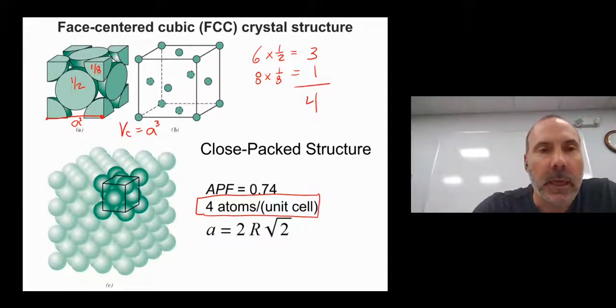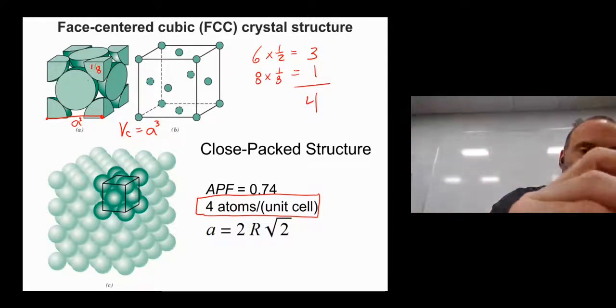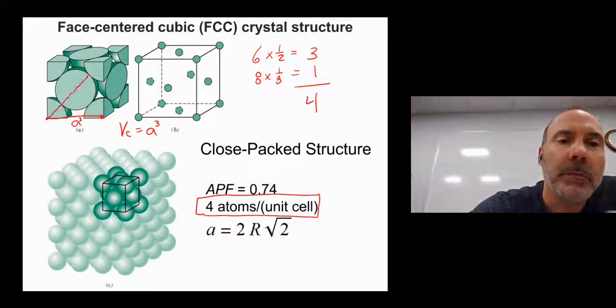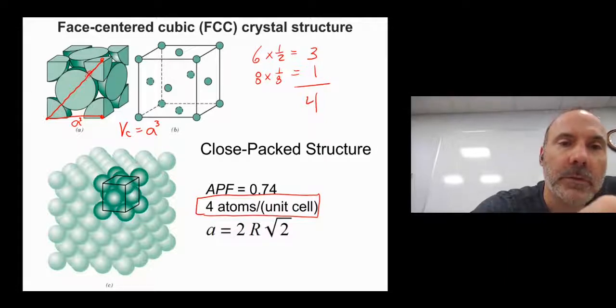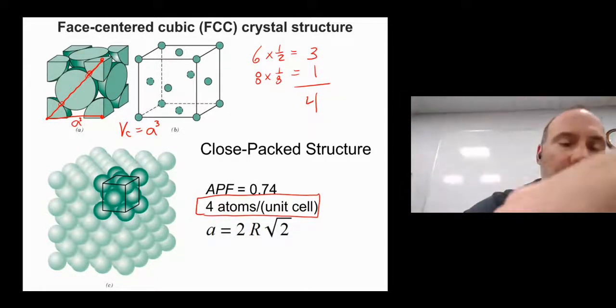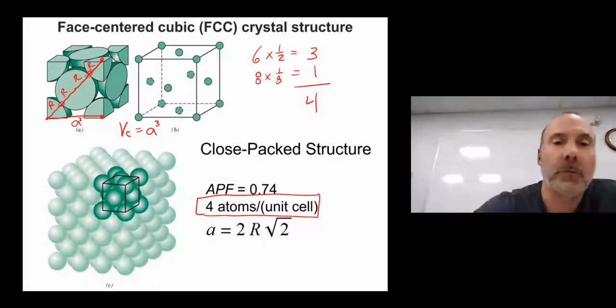So let's find A, the edge length here. So what we're going to do to find A is we want to take a look at our space filling model again and locate where the atoms are touching. So notice in the face-centered system, the atoms are touching along the face diagonals. And so what that tells me is that I've got one, two, three, four R.